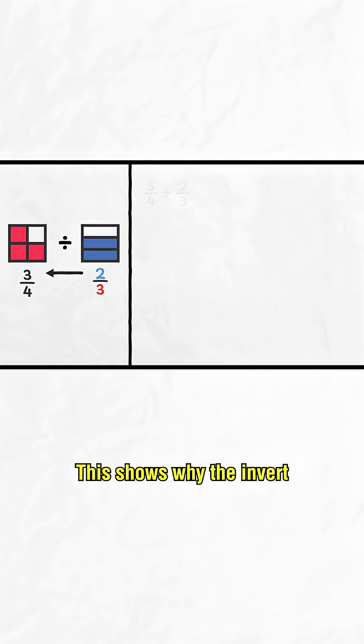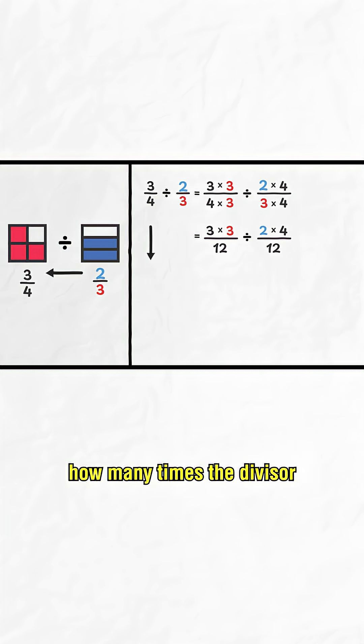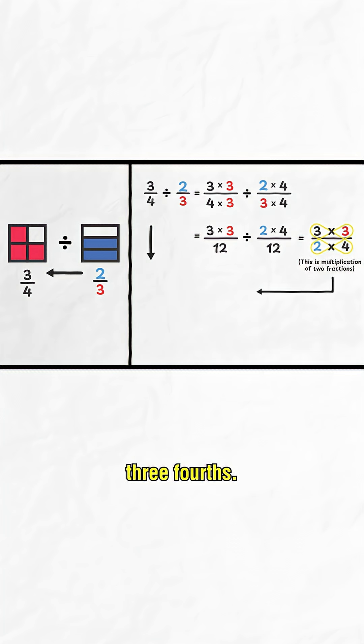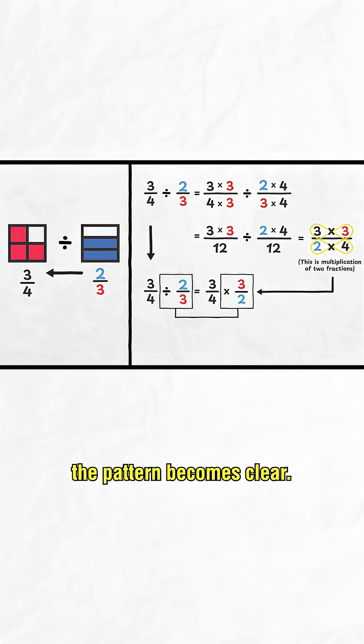This shows why the invert and multiply rule works. We're essentially finding how many times the divisor, 2 thirds, fits into the dividend, 3 fourths. Once you break everything into the same size parts, the pattern becomes clear.